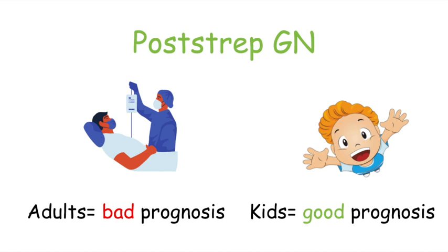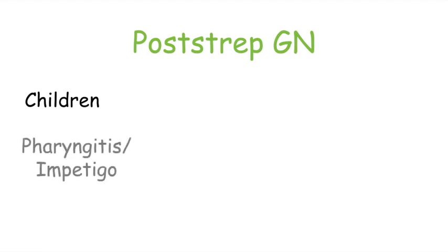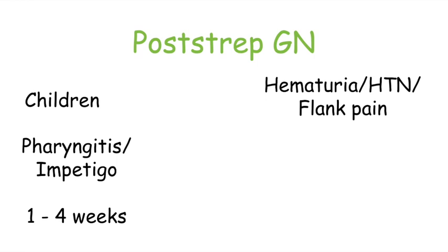In summary, post-strep glomerulonephritis most commonly affects children. They are infected with a nephritogenic strain of streptococci, leading to pharyngitis or impetigo. Within one to four weeks, patients develop hematuria, hypertension, and flank pain. They are managed with supportive care — a low-sodium, low-protein diet — or ACE inhibitors and ARBs for proteinuria and hypertension.